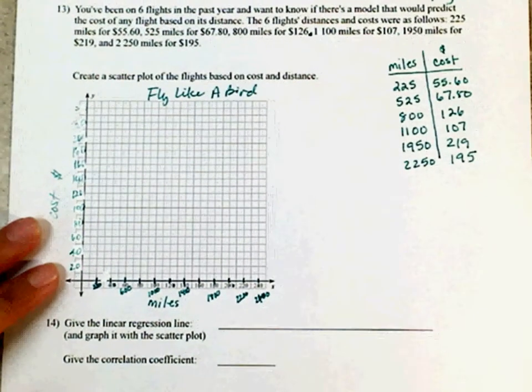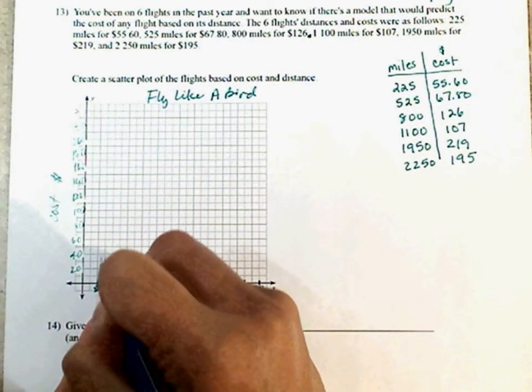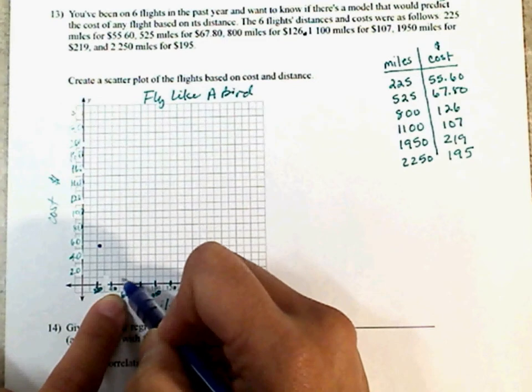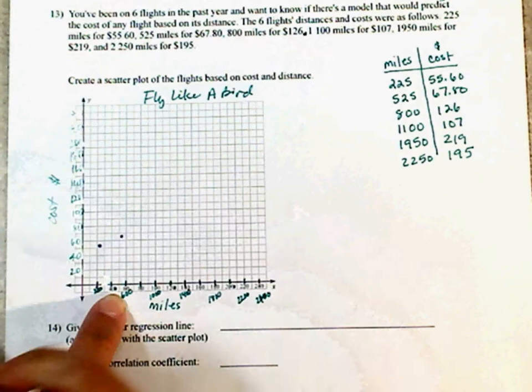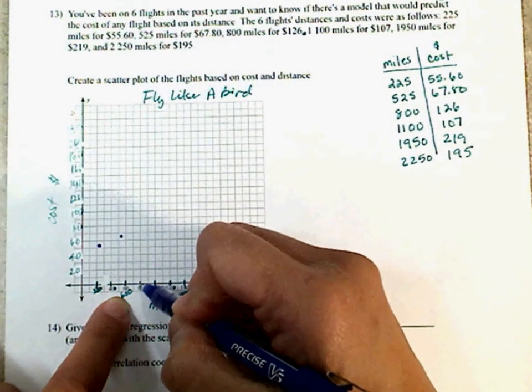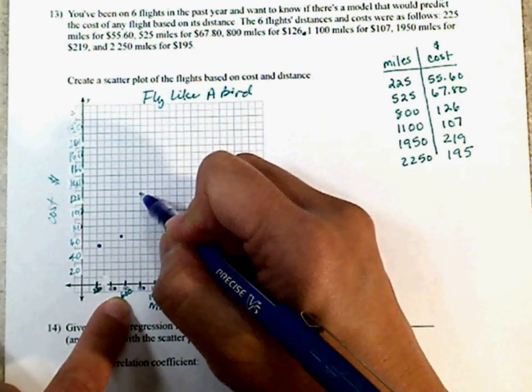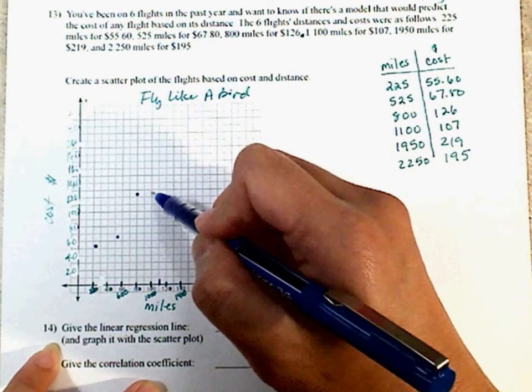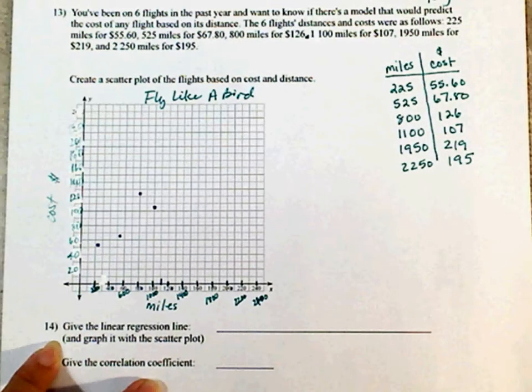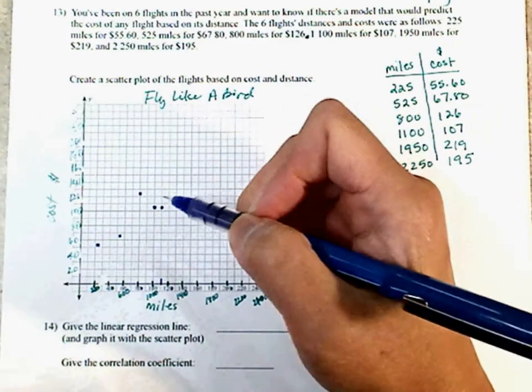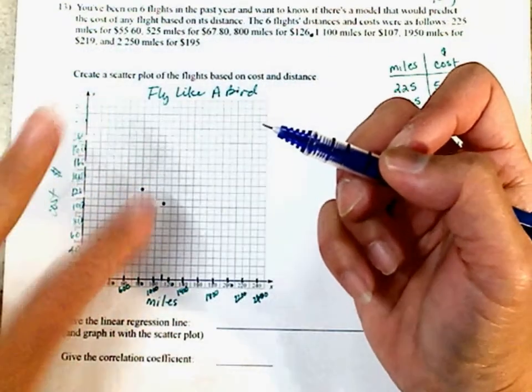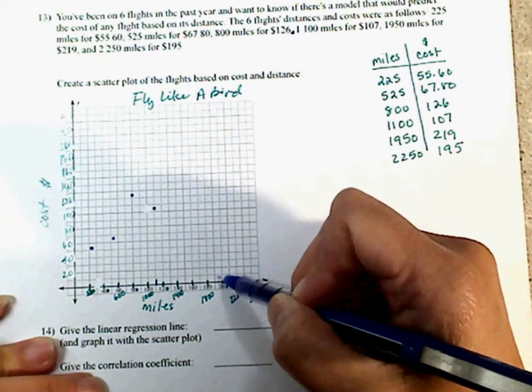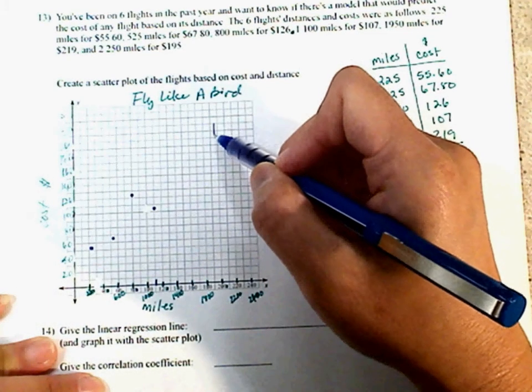Let's go ahead and plot our points. At 225, it is $55.60. So somewhere right here. At 525, about right here, it's $67, almost 70. At 800, which is right here, it'll be 126. So that's 100, 120, 130. So maybe around there. At 1,100, it'll be right here. It is $107. So probably about right there.